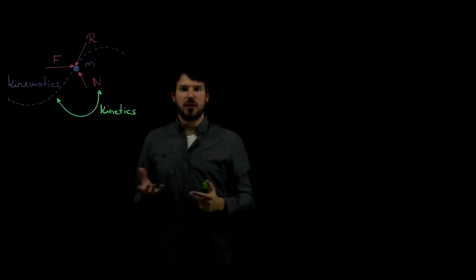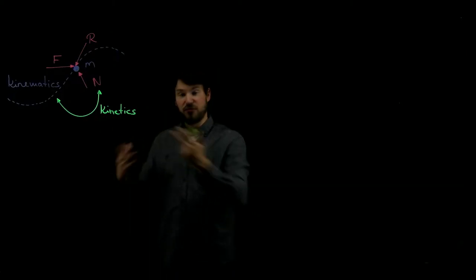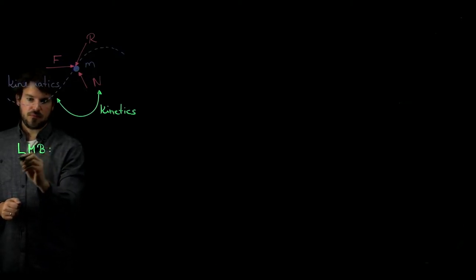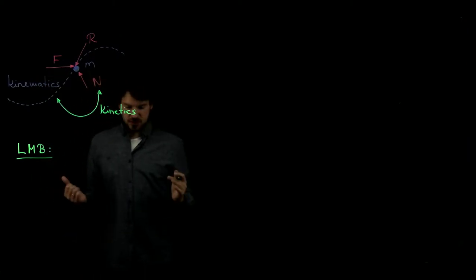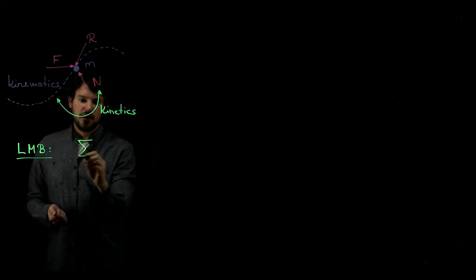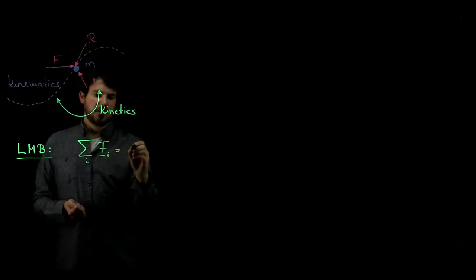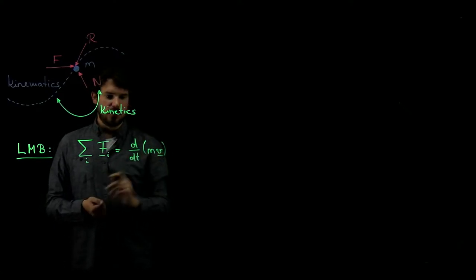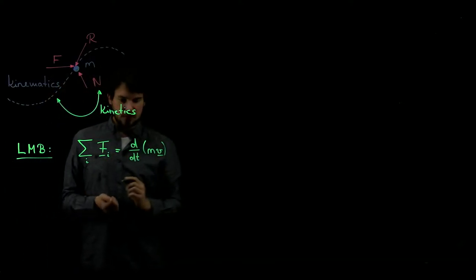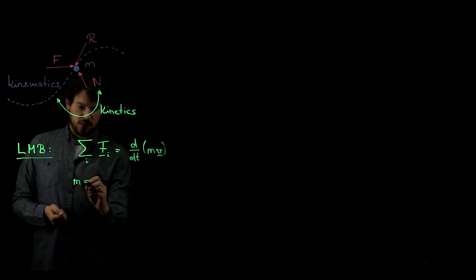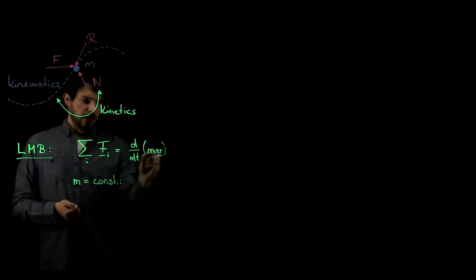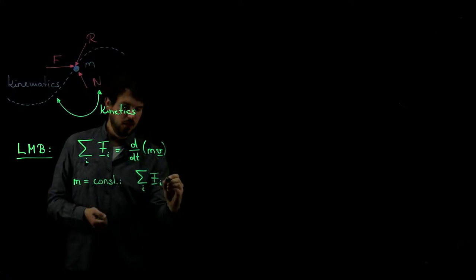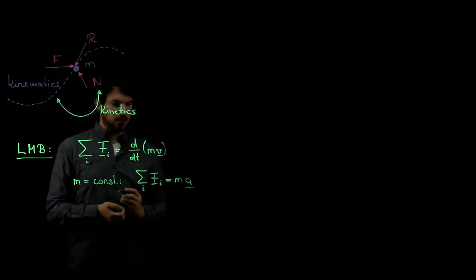There are three fundamental principles we can use to find out how those are related. The first one is what we call LMB, or Linear Momentum Balance. This is nothing else but Newton's famous F equals ma. We had written this as: the sum of all forces acting onto the particle equals the time derivative of its linear momentum vector, which is just mass times velocity — our p-vector. If mass m is constant, this simply becomes the sum of all forces equals mass times acceleration.